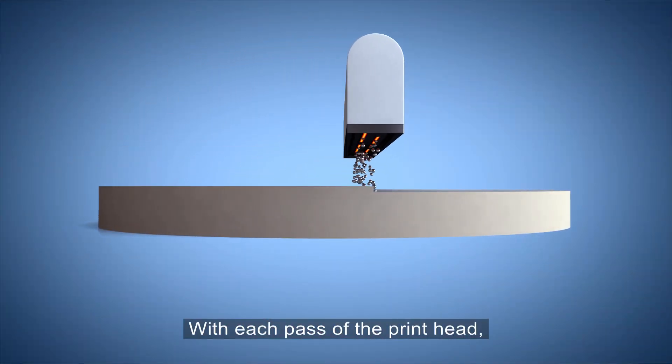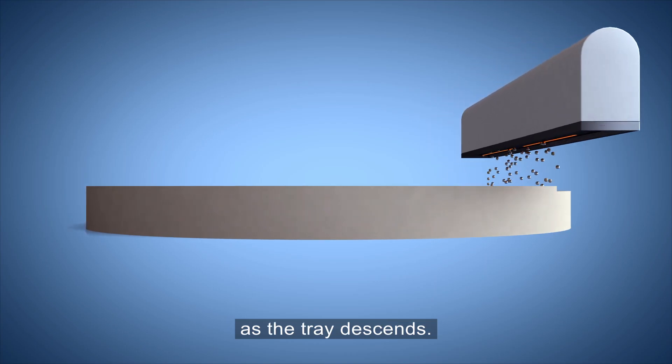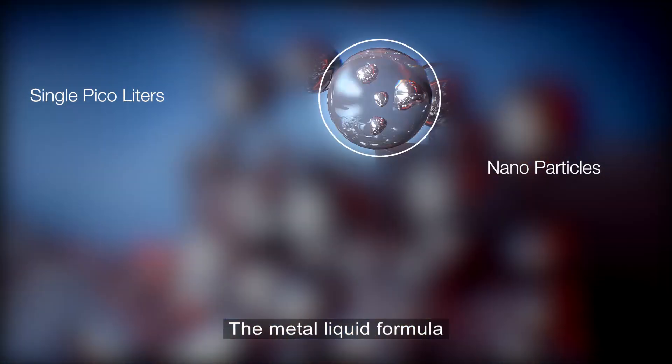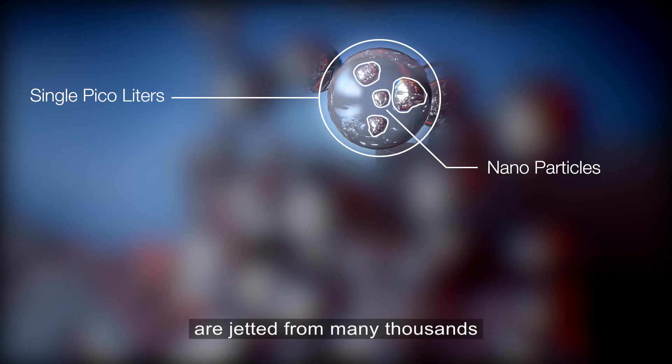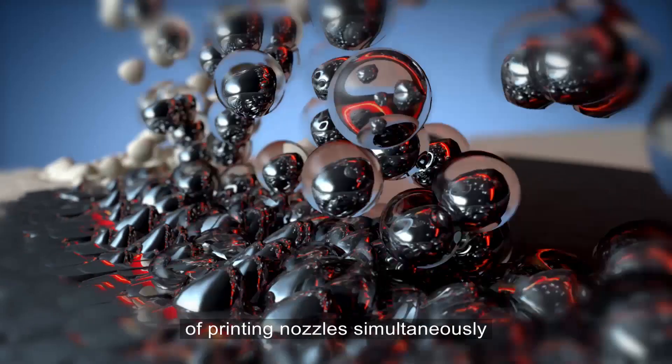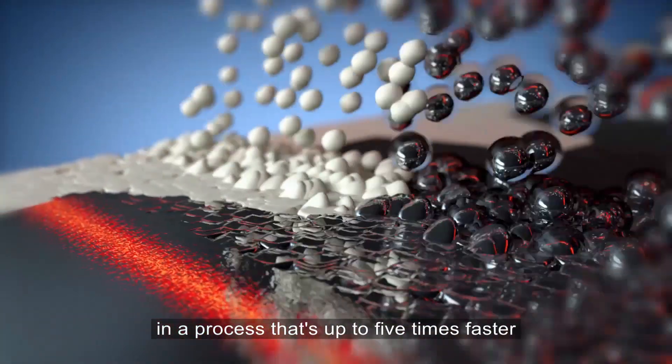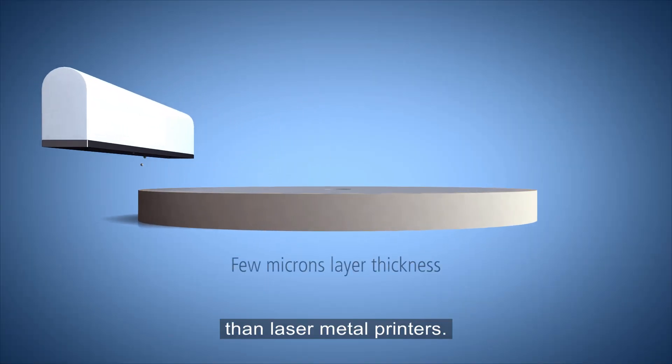With each pass of the print head, the metal part builds up as the tray descends. The metal liquid formula and the support material are jetted from many thousands of printing nozzles simultaneously, in a process that's up to five times faster than laser metal printers.